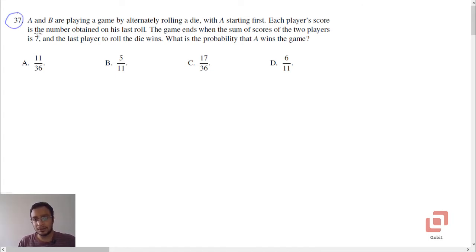This question is based on discrete probability. A and B are playing a game by alternately rolling a die with A starting first. Each player's score is the number obtained on his last roll. The game ends when the sum of the scores of the two players is 7, and the last player to roll the die wins. What is the probability that A wins the game? 11 by 36, 5 by 11, 17 by 36, and 6 by 11.